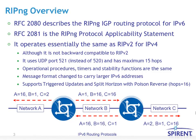RIP-NG, or RIP Next Generation, is defined by RFCs 2080 and 2081. It describes operation which is essentially the same as RIP version 2 for IPv4, so if you're familiar with that, you already have a head start on understanding RIP-NG. Although it's not backwards compatible with it, it uses UDP port 521 instead of 520, and it has a maximum of 15 hops. Operational procedures, timers, and stability functions are essentially the same.